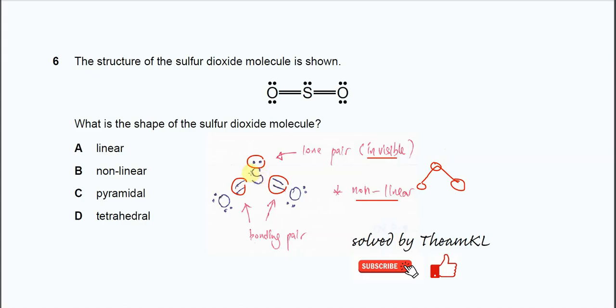Again, sulfur with three electron clouds or three electron pairs—one lone pair and two bonding pairs. Therefore it's non-linear.